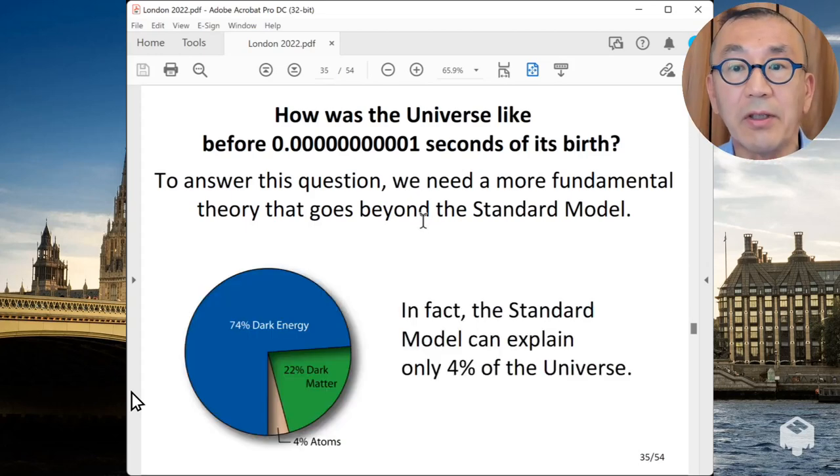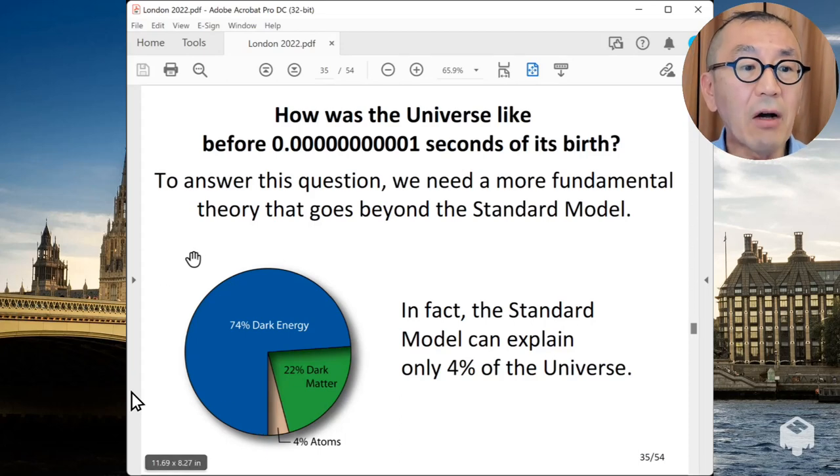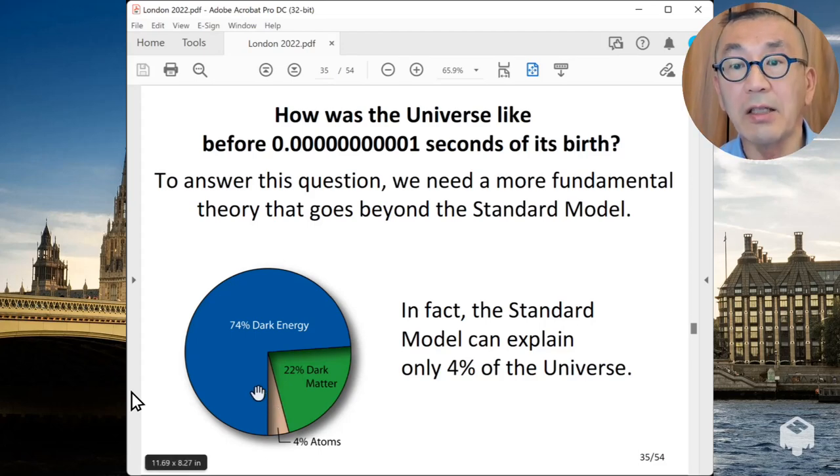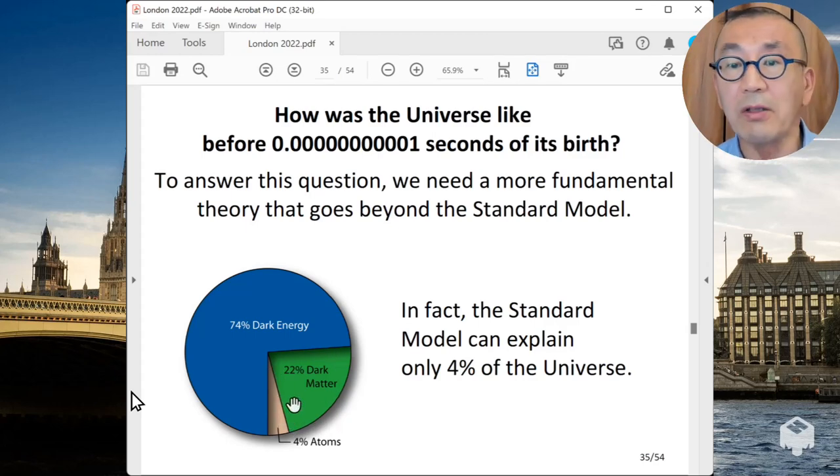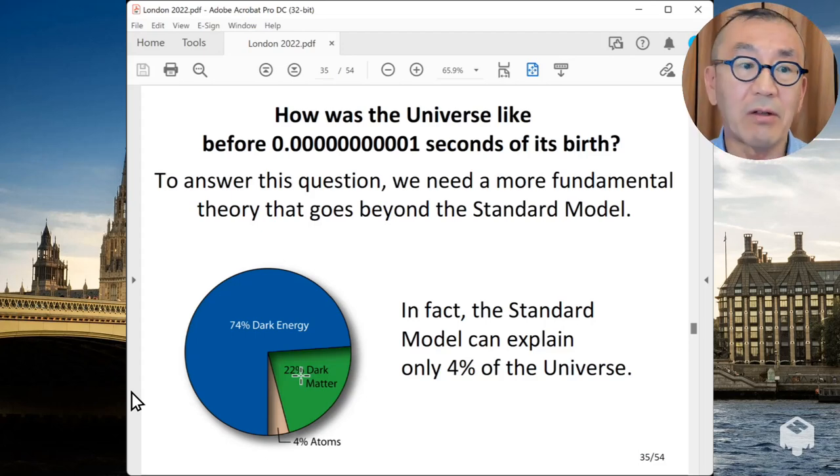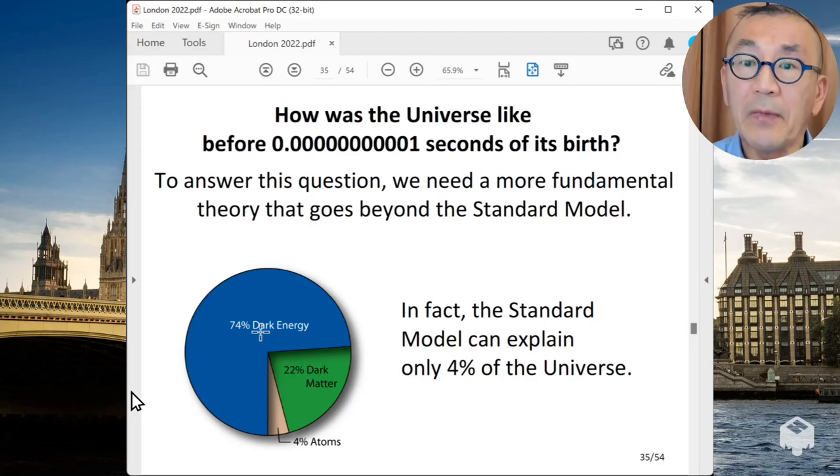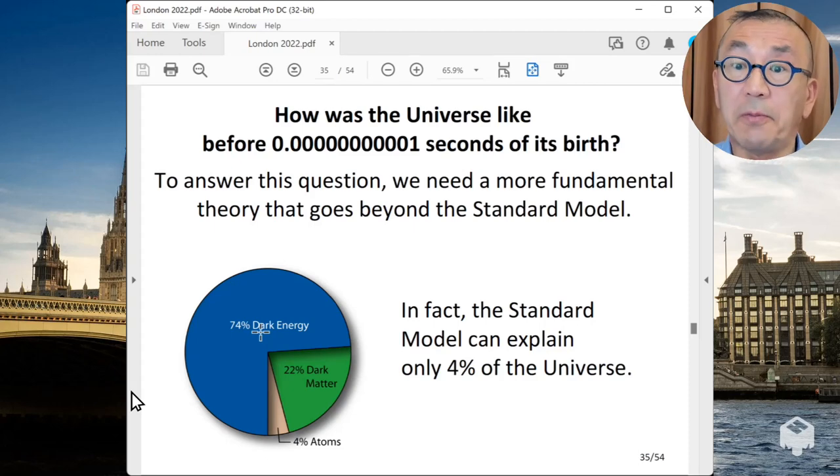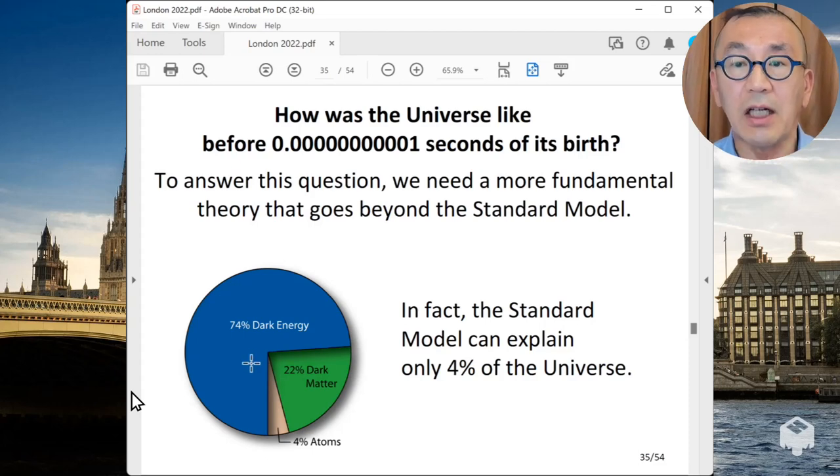And there are reasons to think that the standard model is not complete. For example, we can only explain the 4% in terms of the energy of the universe by using the standard model of particle physics. We now know that the universe has a large component of the universe called dark matter. There are like five times more dark matter than ordinary matter. We don't know what they are made of. And there is also even mysterious energy called dark energy, which is responsible for the accelerated expansion of the universe.